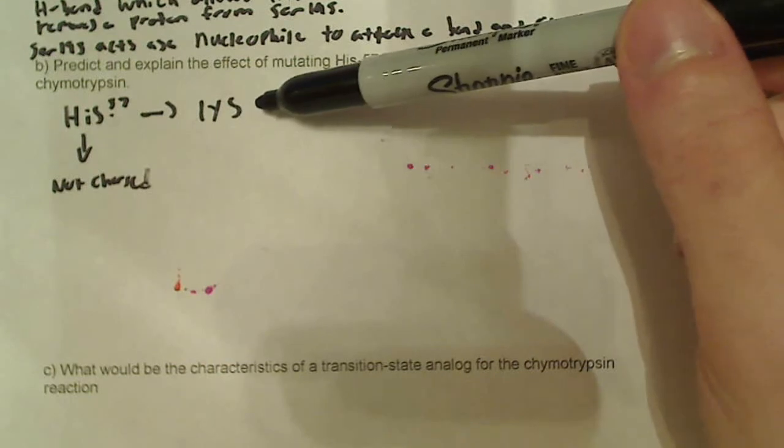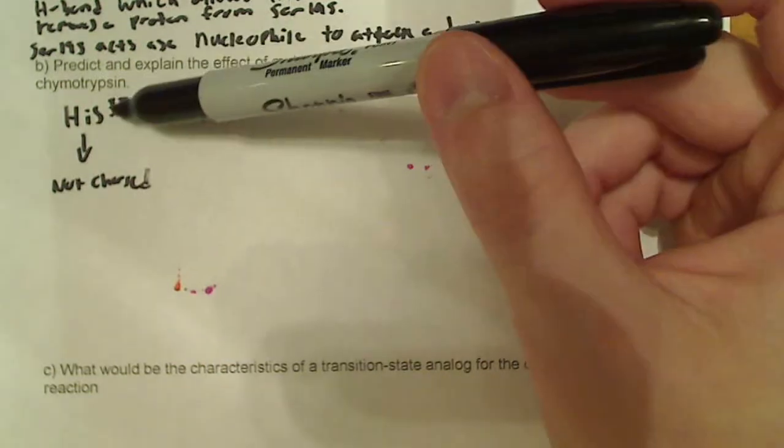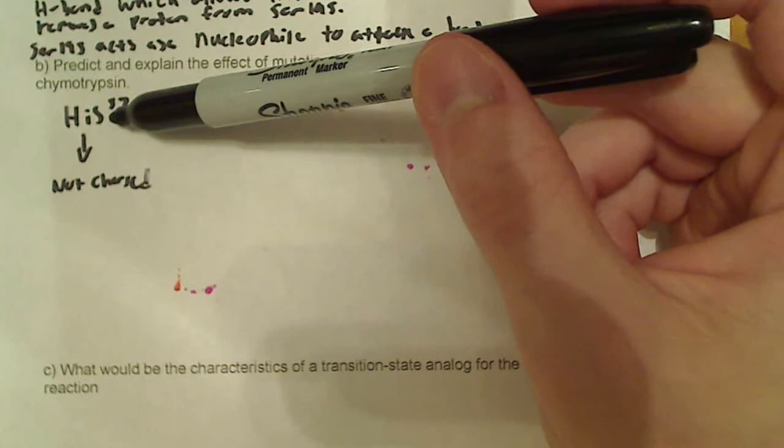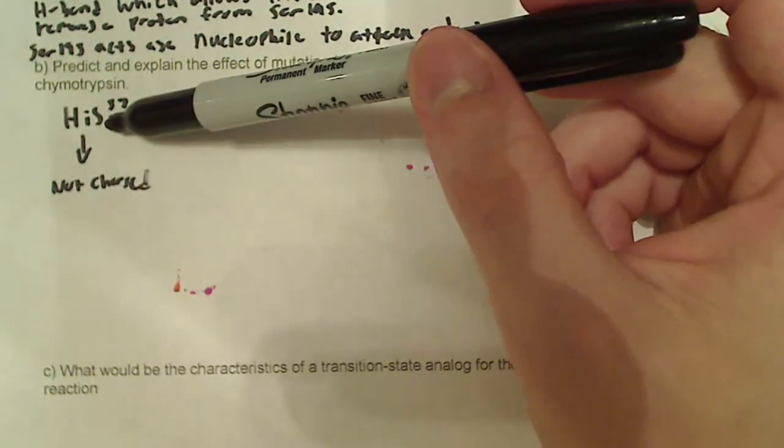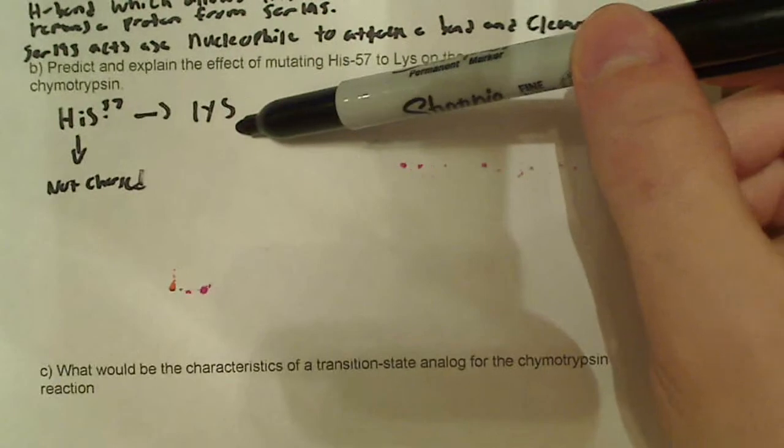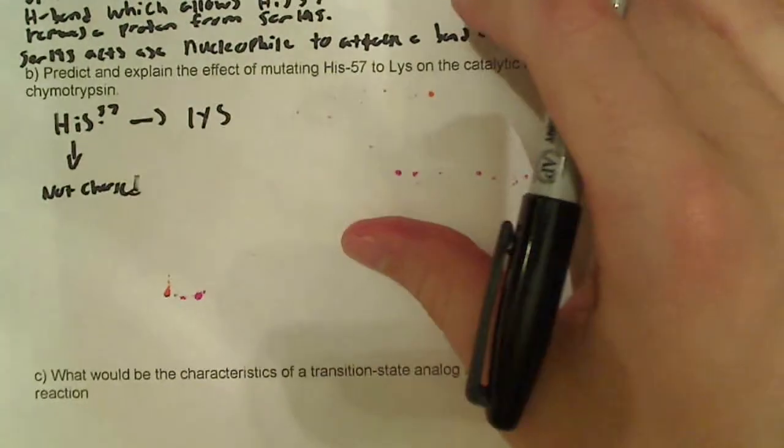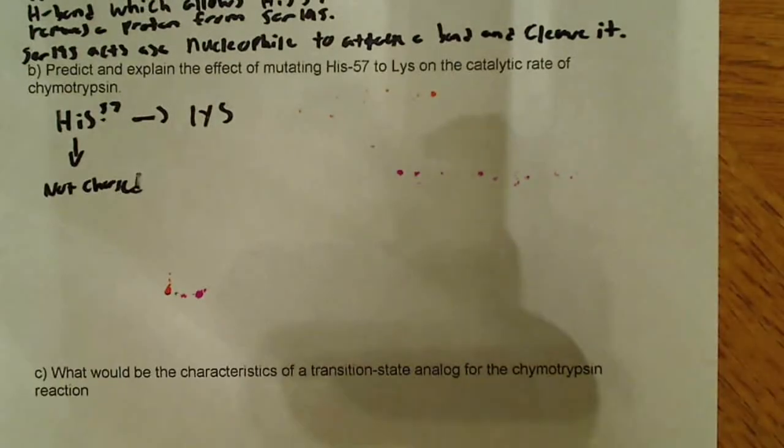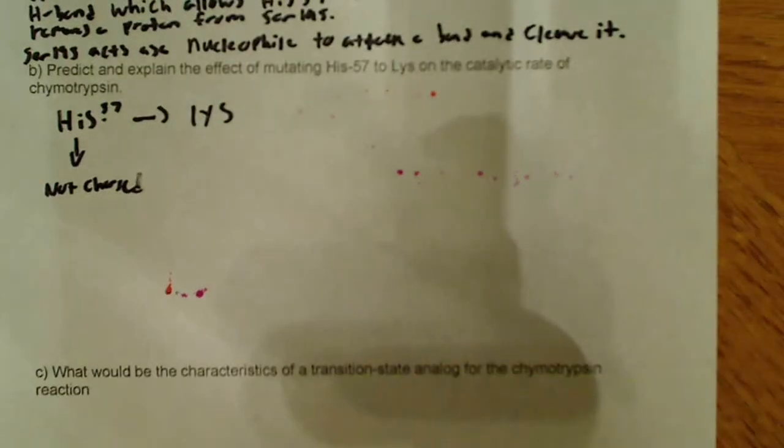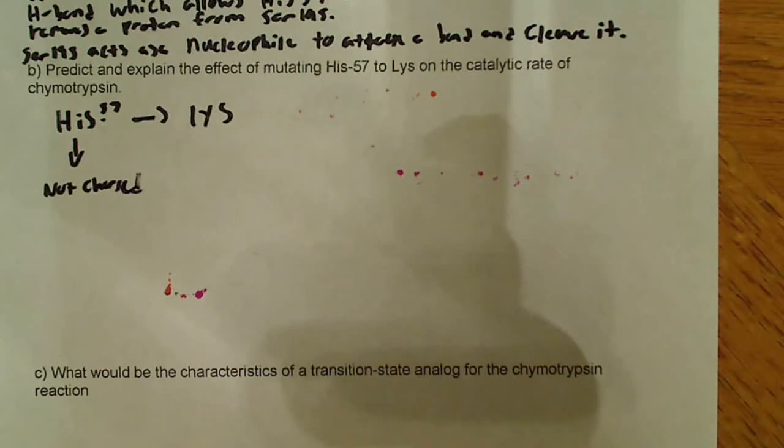So this is going to be protonated. So obviously, if we're substituting something here that's a polar amino acid, but this is not charged and this is charged, then that's going to definitely have some kind of effect on the catalytic rate. And obviously, it's probably going to have a pretty detrimental effect on the catalytic rate because we're changing something that's polar uncharged, in this case, under these conditions, to something that's polar charged. And that's going to make a difference.